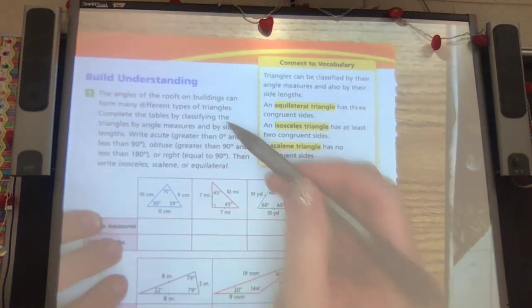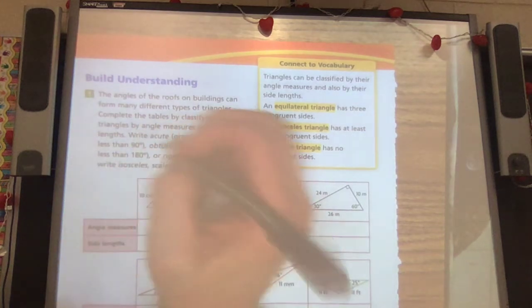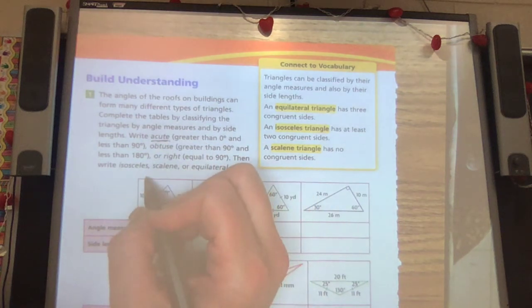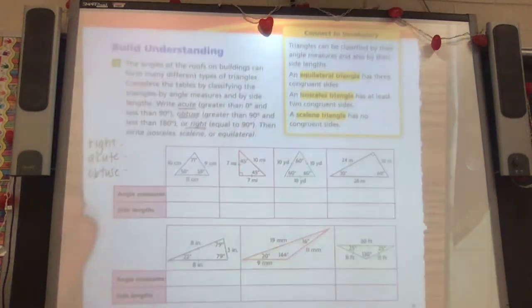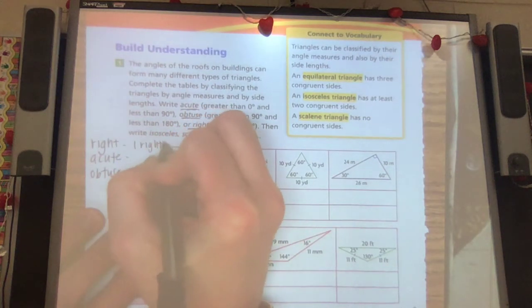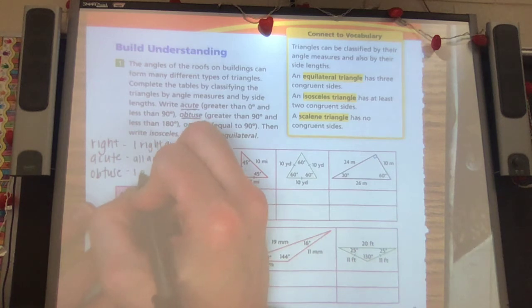It says the angles of roofs on buildings can form many different types of triangles. Complete the tables by classifying the triangles by angle measures and side lengths. Write acute, obtuse, or right. Then isosceles, scalene, or equilateral. Okay. So just like we discussed our side lengths, we can also talk about our angles. So our angles, like they said, are either acute, greater than zero, less than 90, obtuse, greater than 90, or right. And just like the sheet that y'all have, right has one right angle. An acute has all acute angles. And an obtuse has one obtuse angle.